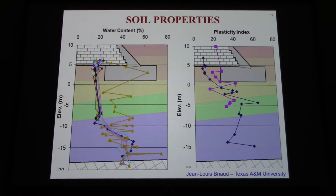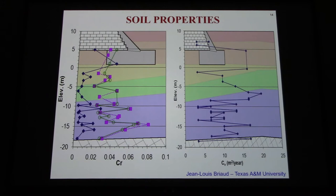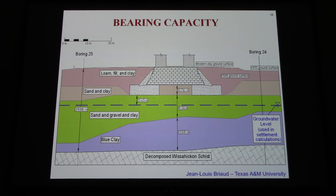Here are some of the soil properties: on the left is water content, on the right the plasticity index. This is the pre-consolidation pressure — we'll see that later when we discuss the consolidation test. This is the compression index, and this is the recompression index. We'll talk about the coefficient of consolidation. But this one may be quite useful: the blow count from the standard penetration test. You can see how the original foundation was in relatively soft material — very low blow count. But then the sand layer has a blow count that reaches about 100, which is quite dense and quite high. That's why the monument doesn't have any settlement problem during the second phase.